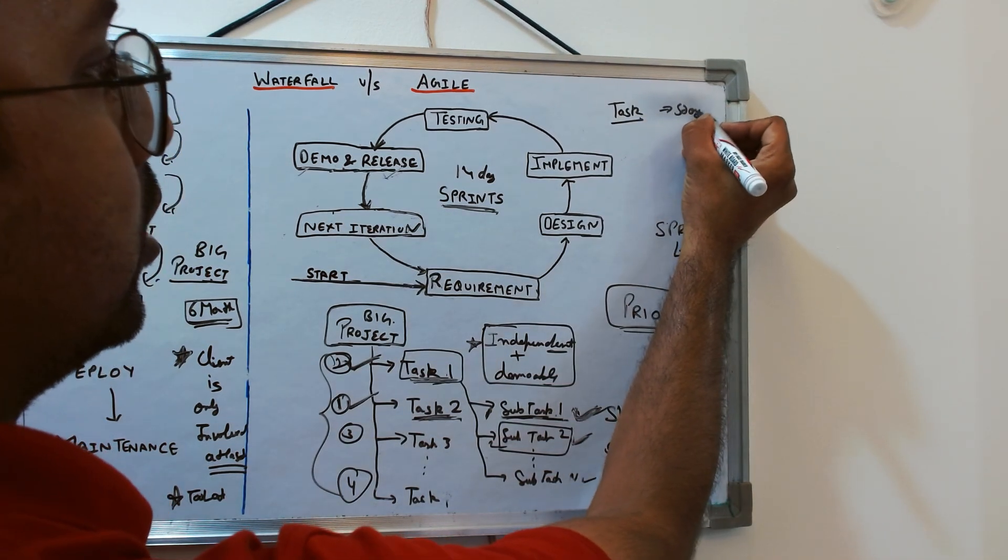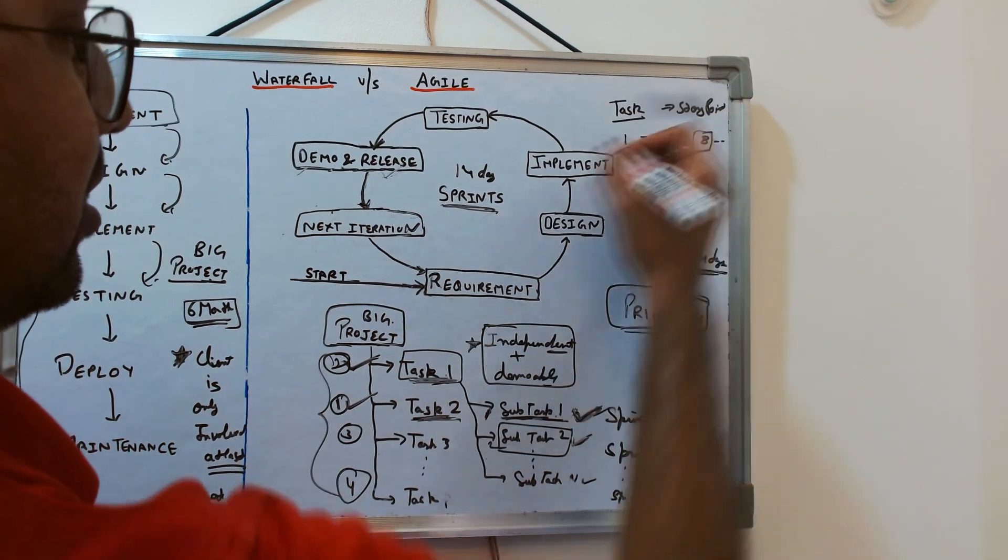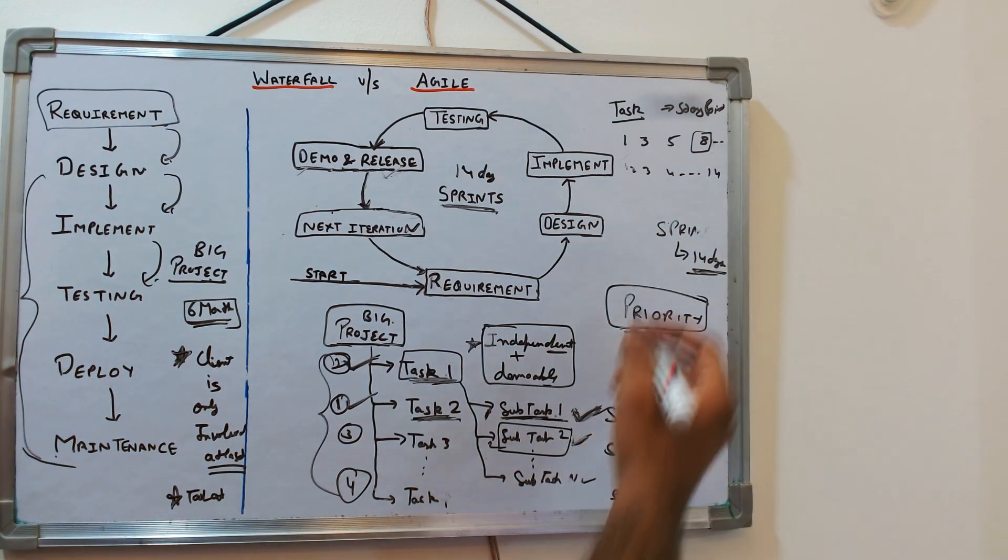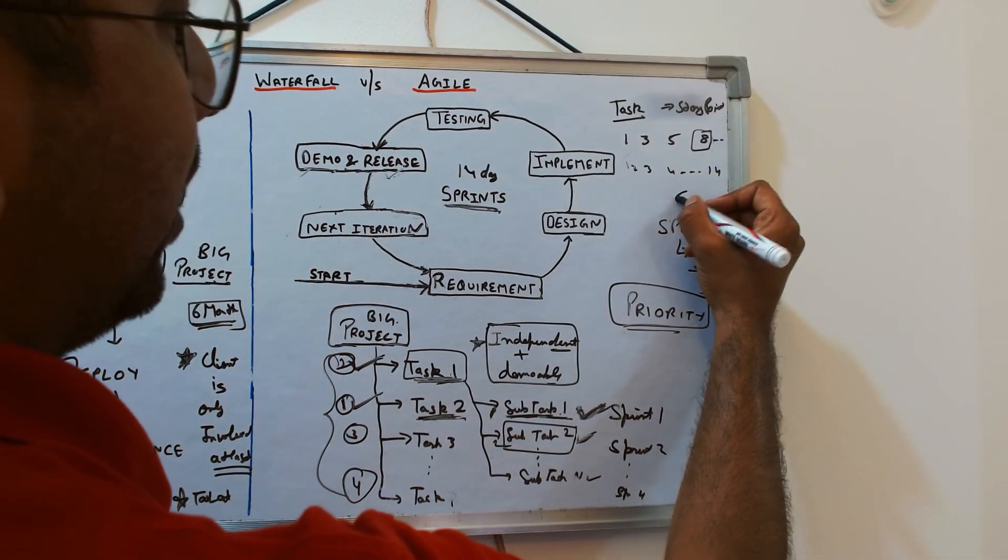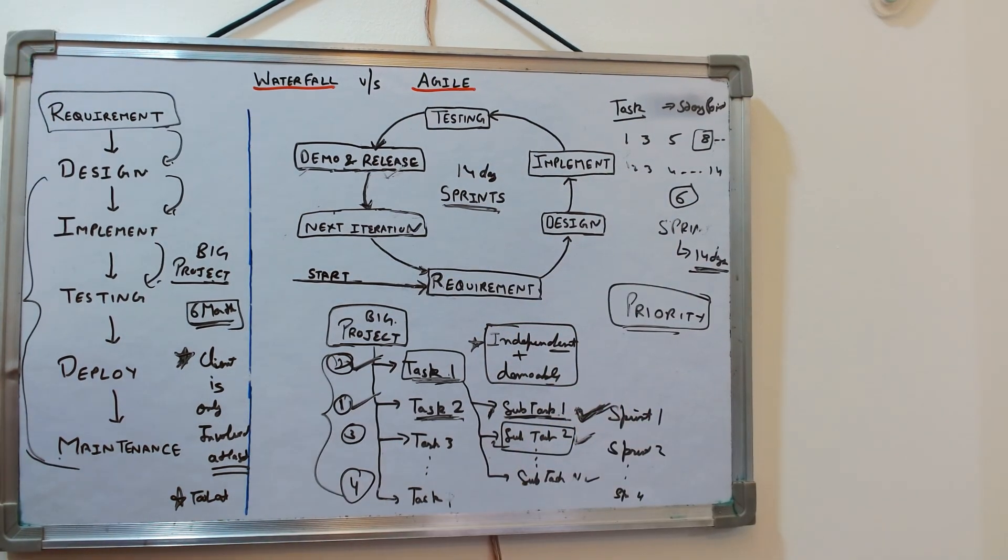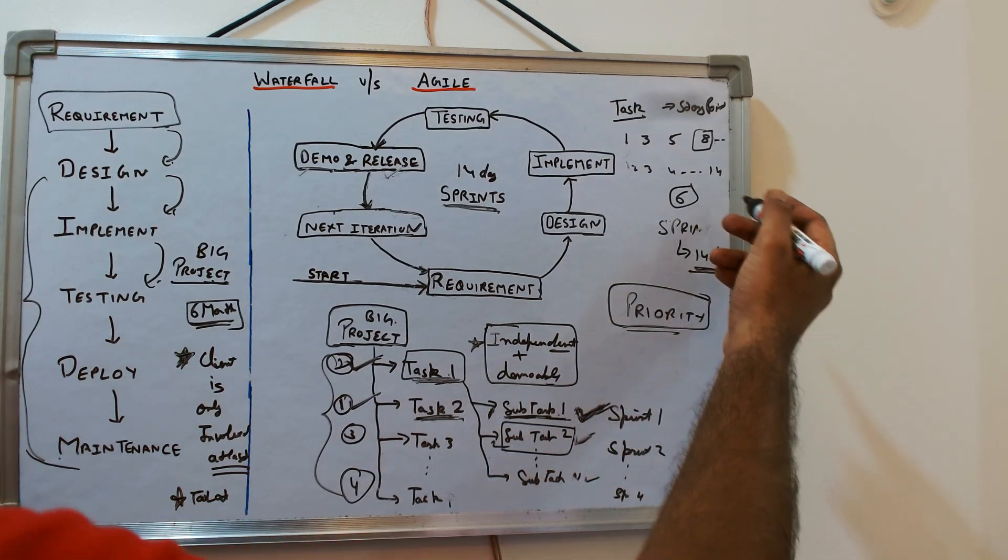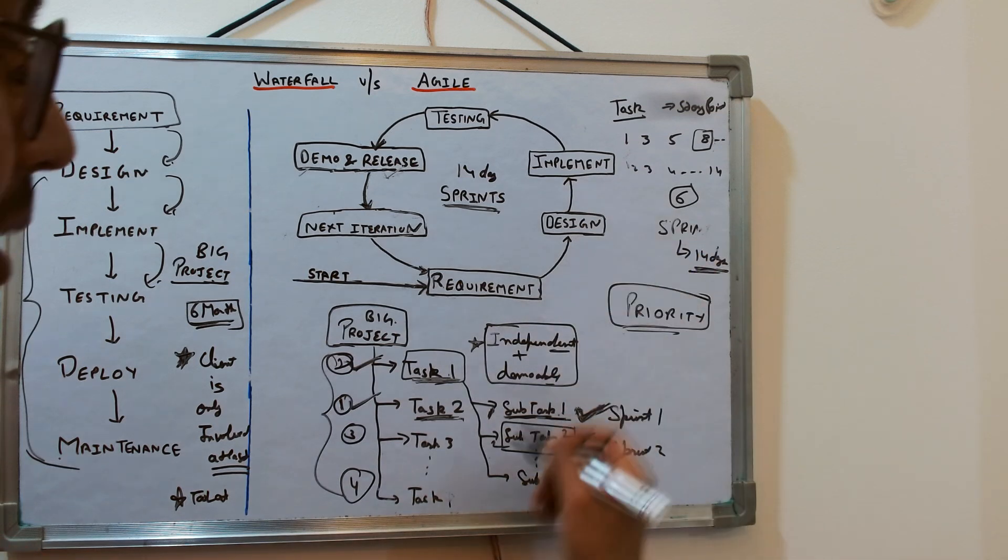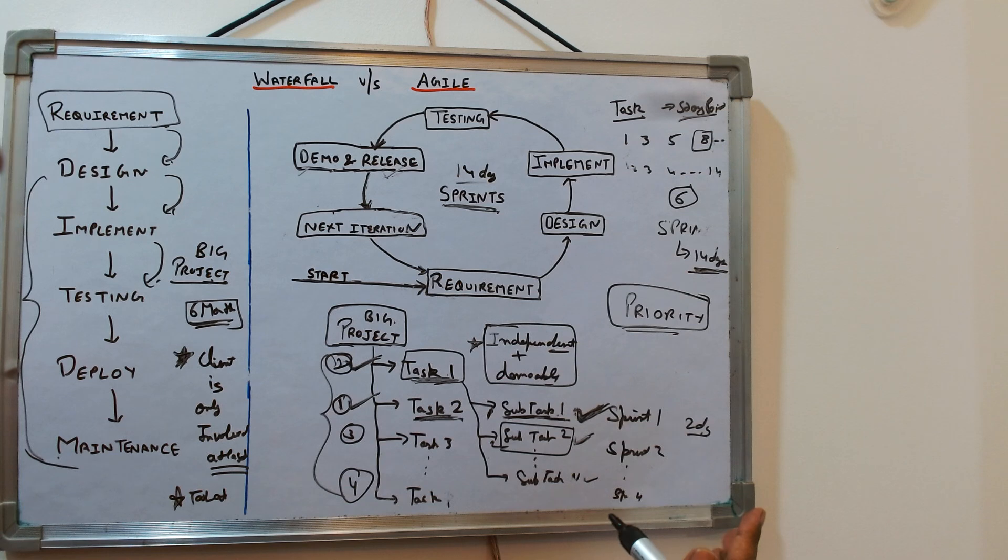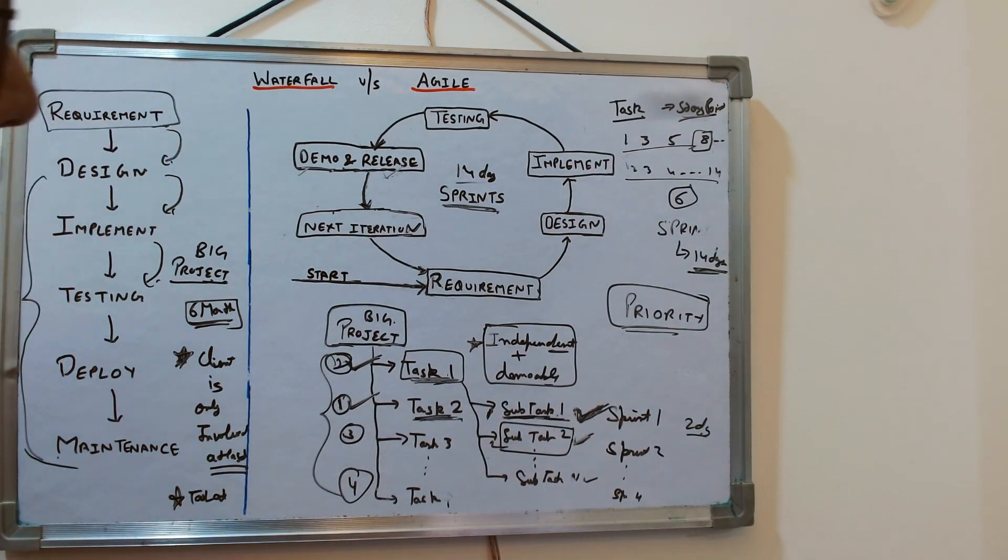For each task, we have to give a story point. Some follow days, so 14 days: one, two, three, four, till 14. If I give a story point as six, it means out of 14 days, I will require six days to complete this subtask, meaning I have a bandwidth of another eight days for some other task that can be assigned to me. As a team, you all gather and decide the story point for each subtask.